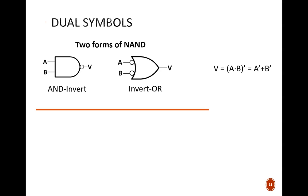Dual Symbols. What we see here are two ways of drawing the same logic. This is why they are called dual symbols, two ways of representing the same thing. On the left is what we typically call a NAND gate. That is a correct term, but even more specific is to call it an AND invert gate. The AND operation comes first, then it is inverted by this bubble.